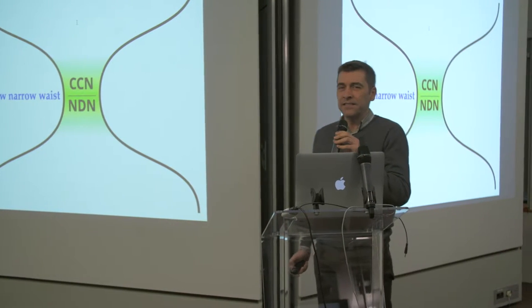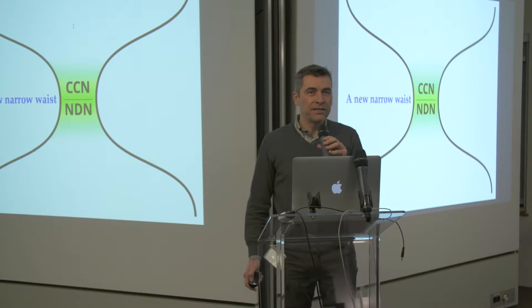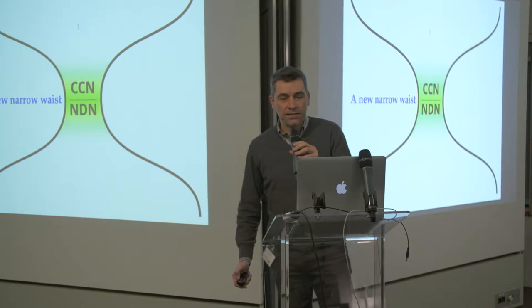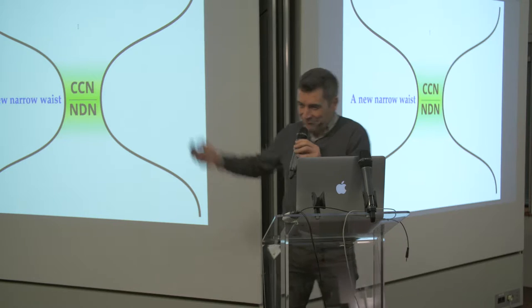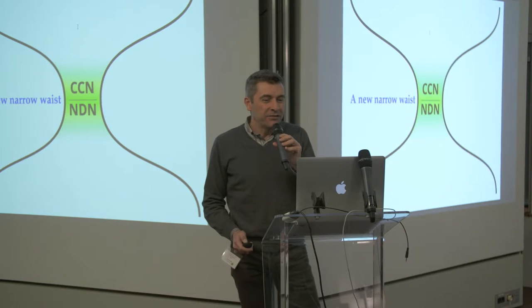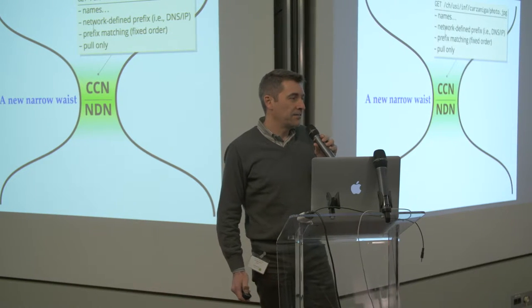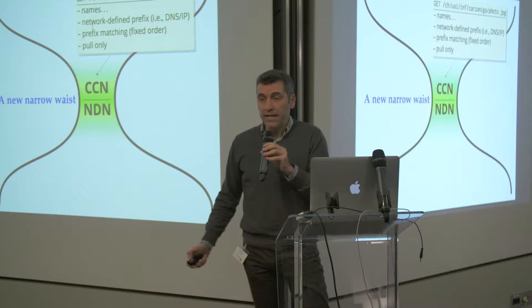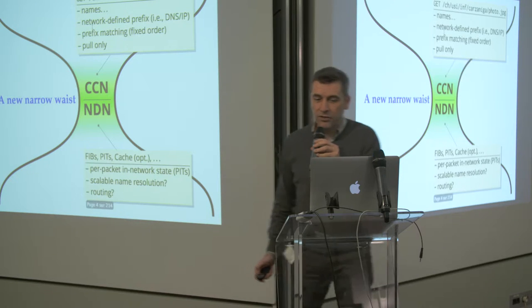The idea of ICN, generally speaking, is to reinvent or improve the thin waist. I'm going to describe it in terms of the two mainstream projects in this area: CCN and NDN. The idea of these mainstream projects is to redesign the thin waist so that it looks a bit like the web — a pull service where you get information, either objects or chunks of those objects, by name. That's the main idea.